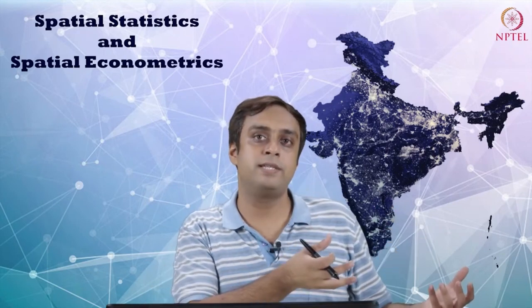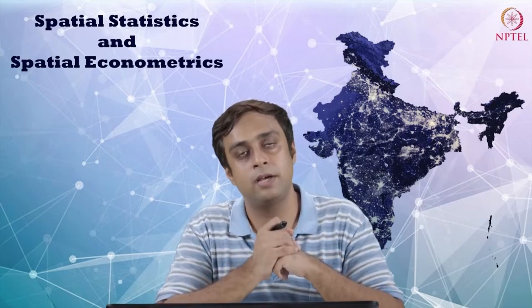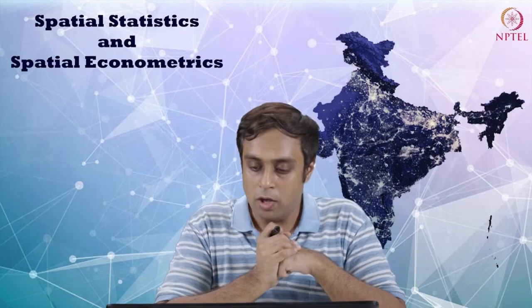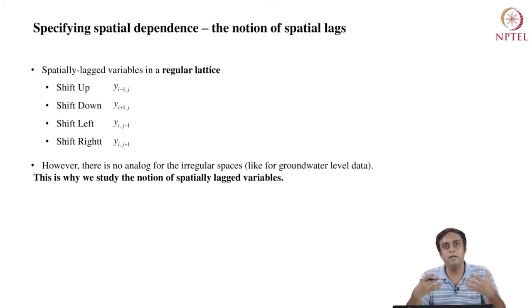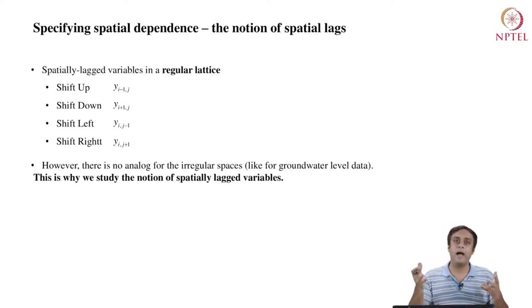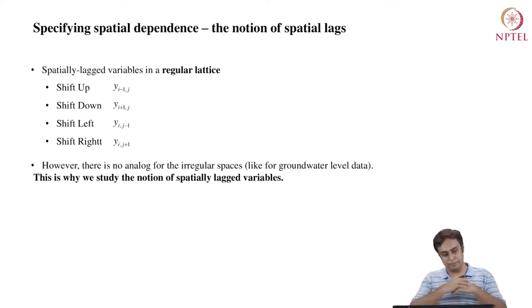In the previous lecture, what we studied was a generalized least squares estimator — that had nothing to do with unbiasedness or causality. It was in order to reconcile the heteroscedastic model error structure. Before we move forward and deal with the problem of causal inference, let us get back to specifying spatial dependence with the notion of spatial lags.